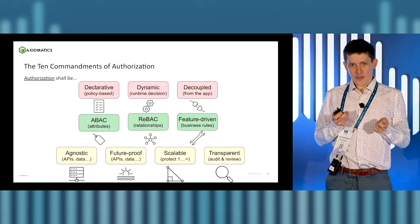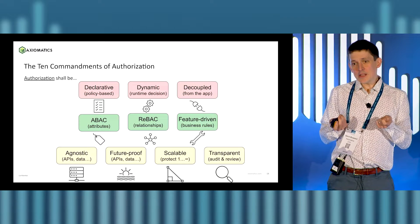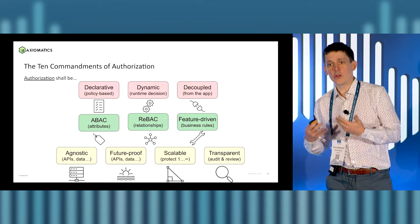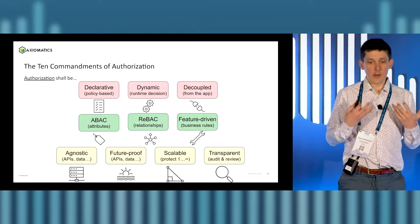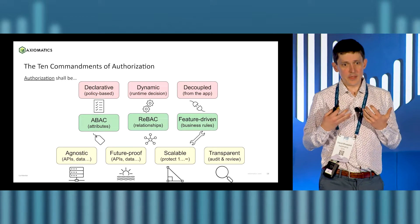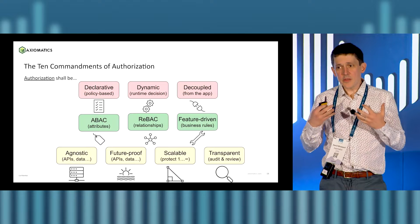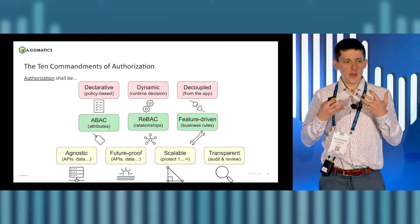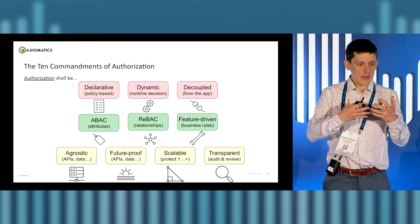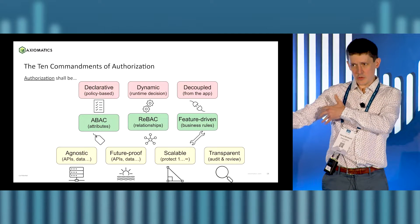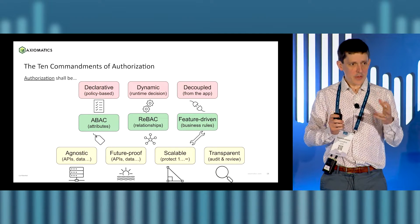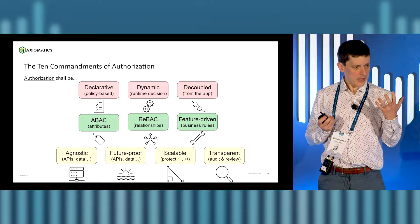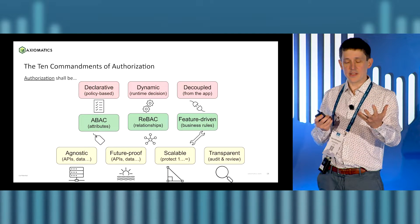I came up with a list of 10 commandments that when you build an authorization solution or use an authorization framework, you should try to follow. Number one: you want your authorization to be declarative. You want to use some kind of configuration mechanism — a policy, a graph, maybe an advanced access control list — something you can look at and understand, something you can share with the audit team and the compliance team.